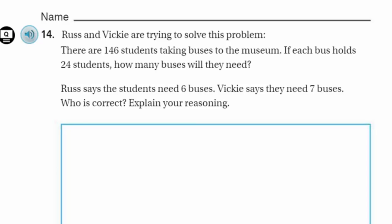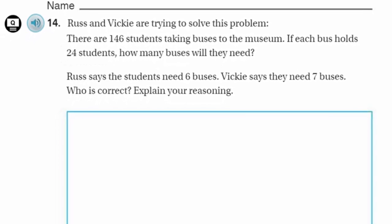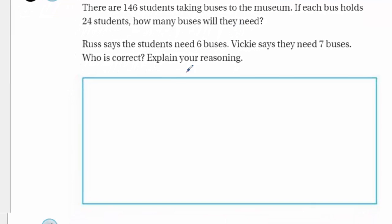We have a whole quantity, a number that we're trying to put into equal groups — 146 students. Now, the fact that they're going to the museum is kind of immaterial. However, it is important that we know the bus holds 24 students. That's our divisor here, and then we'll find out how many buses they're going to need. So I'm seeing 146 divided by 24. Looking at this here — not so nice.